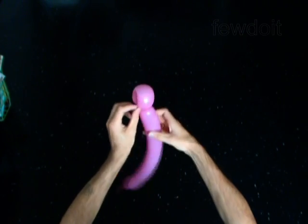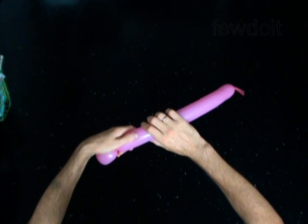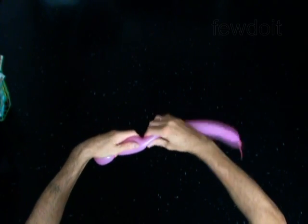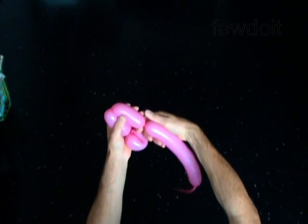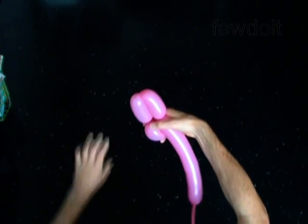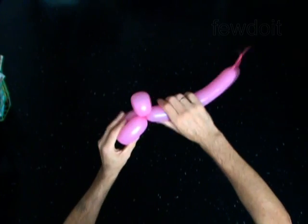The next 3 bubbles you twist in the bird body fold to make the body. Twist the second 4-inch bubble. Twist the third 4-inch bubble. Lock both ends of the chain of the last two bubbles in one lock twist.